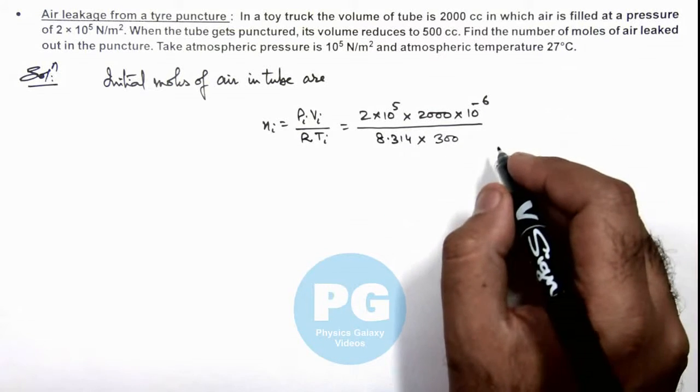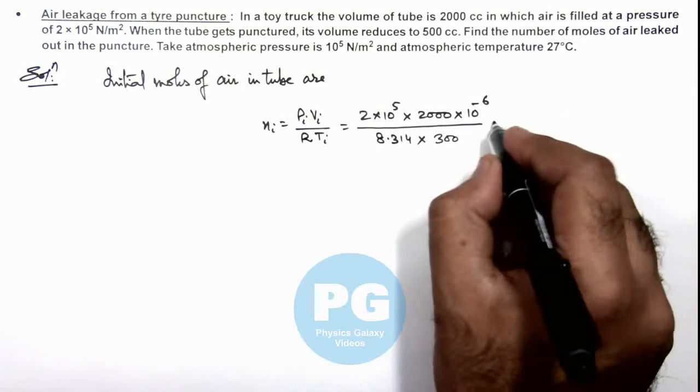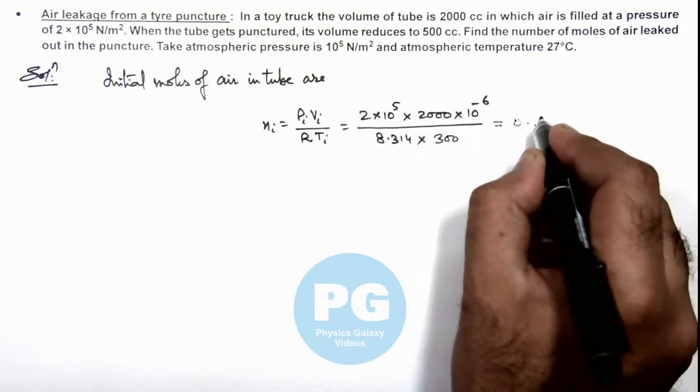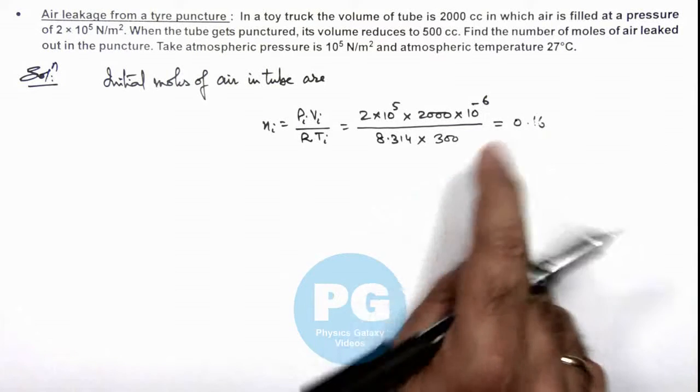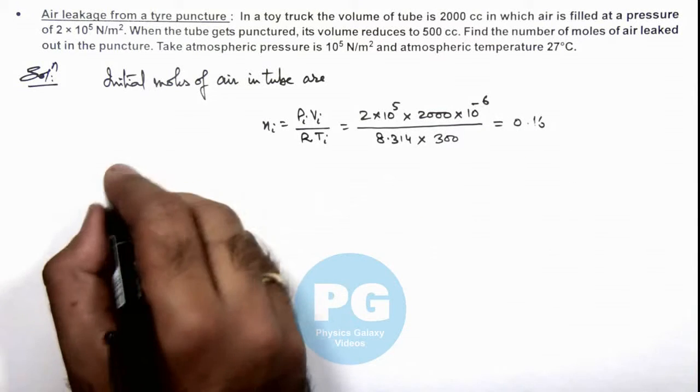So if we simplify, this result will give us 0.16. So these are the initial moles of air in tube. And if we calculate final moles of air...